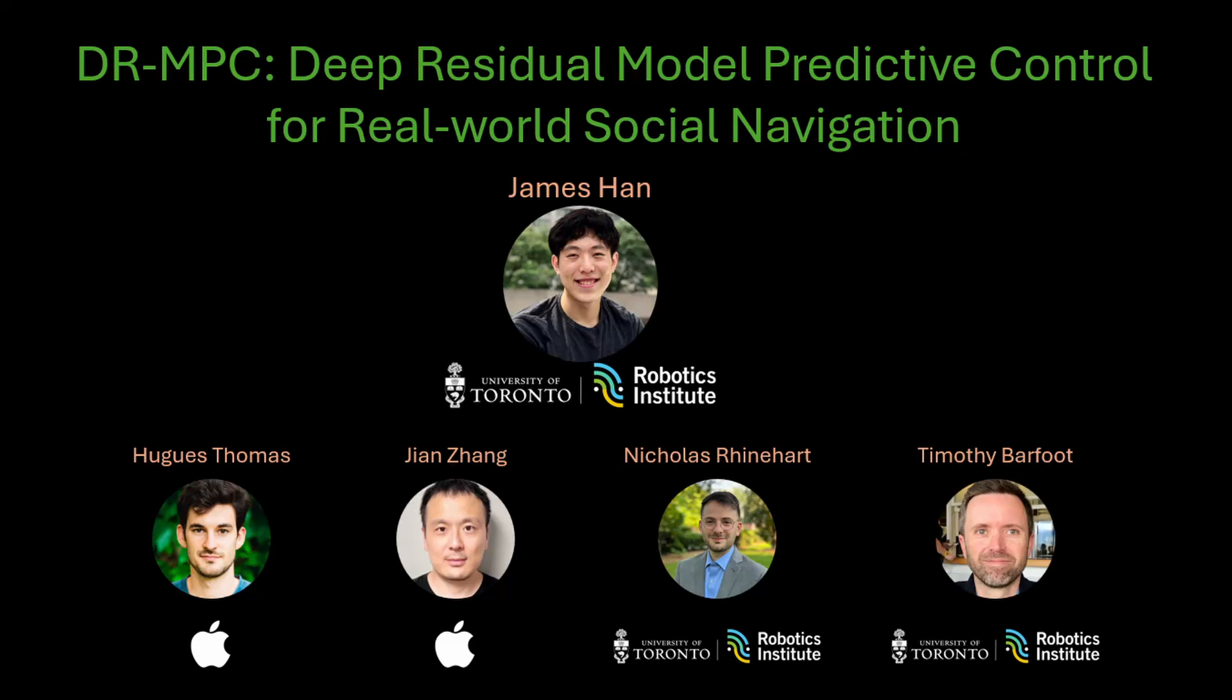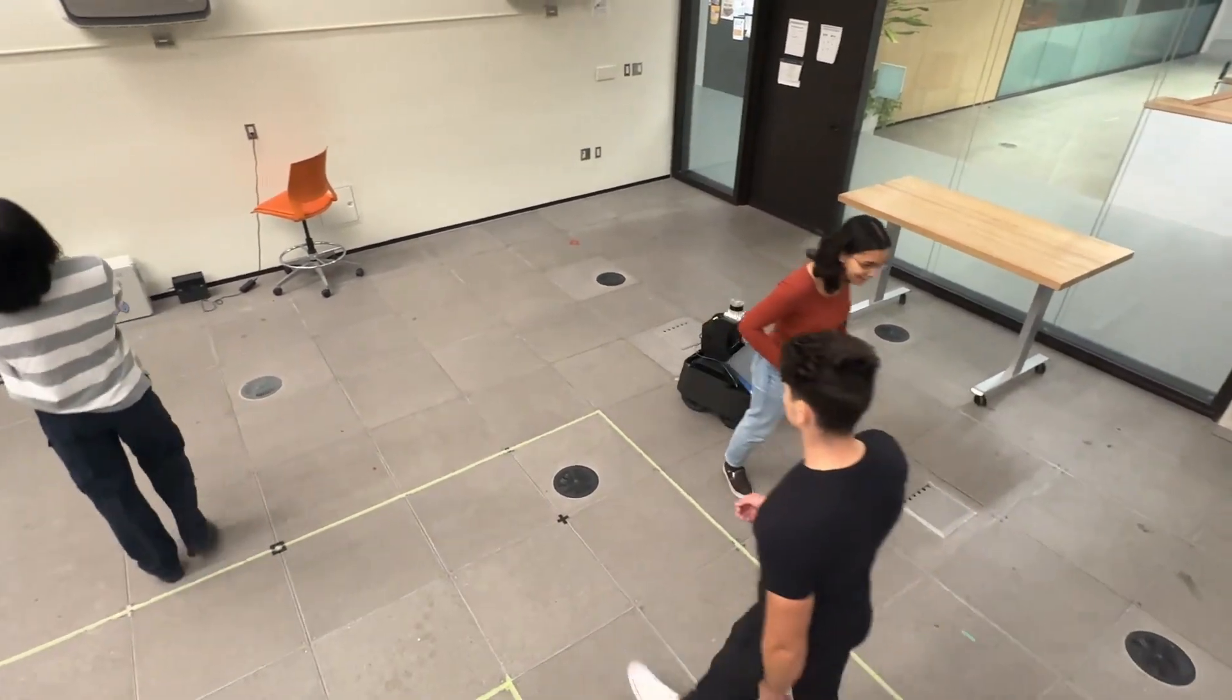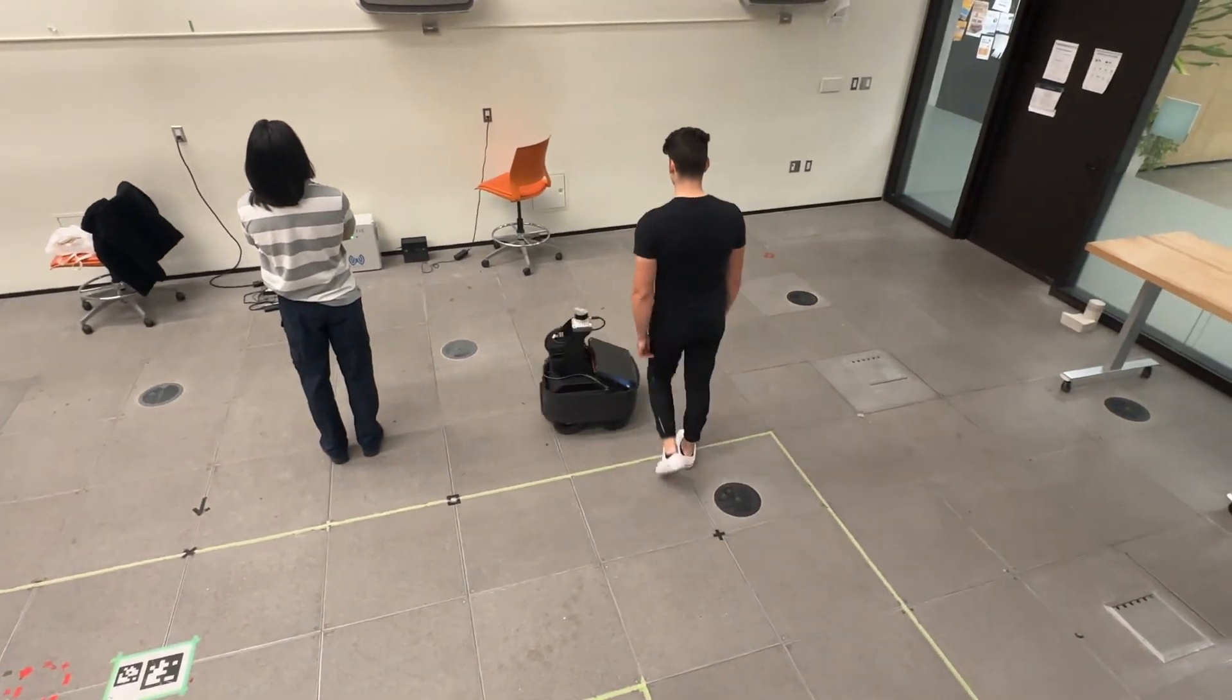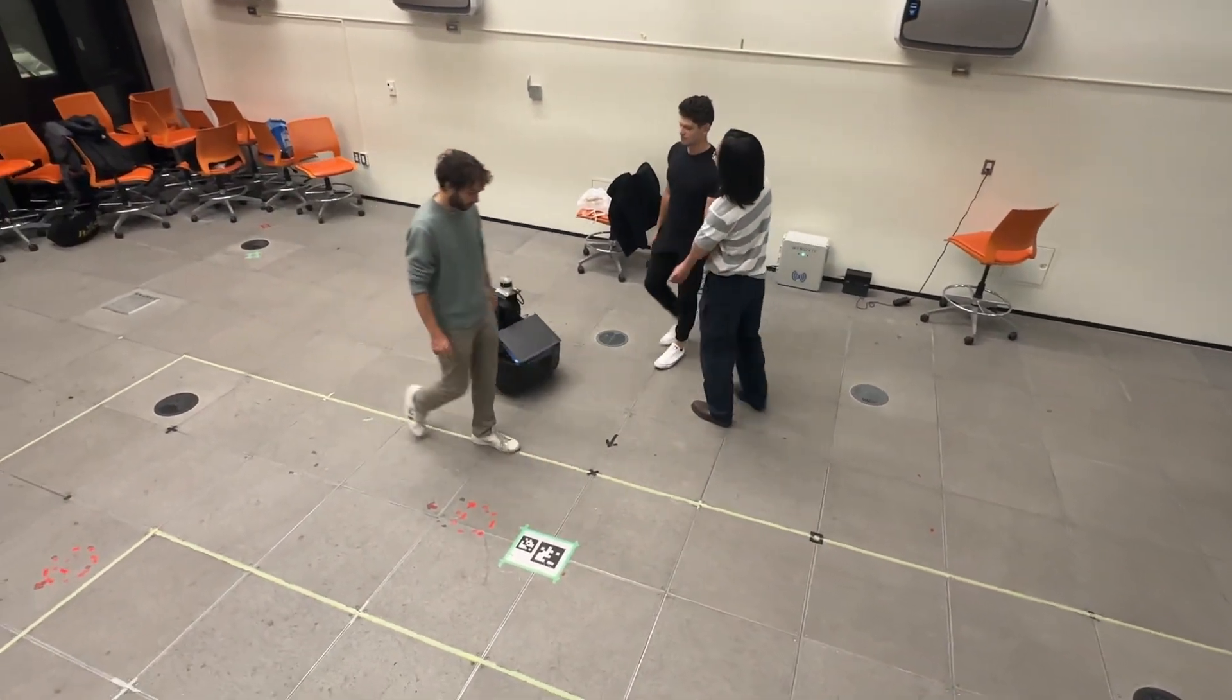We present Deep Residual Model Predictive Control for Real-World Social Navigation. This single-sensor robot is running an RL agent trained directly in the real world with less than 4 hours of data without any simulation being used. Let's see how it's done.